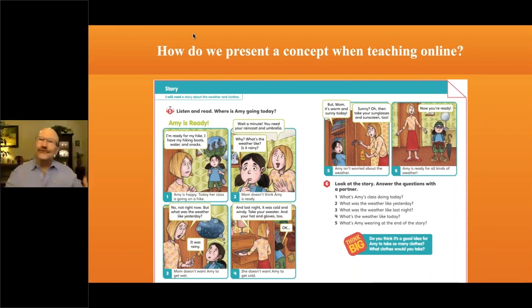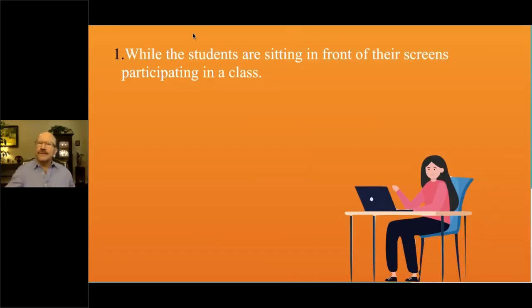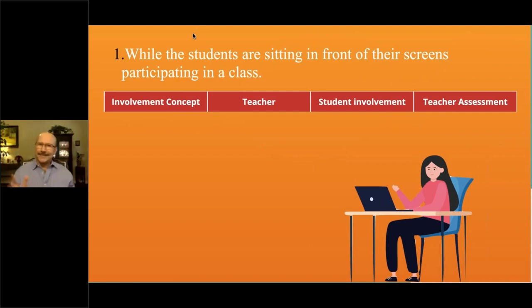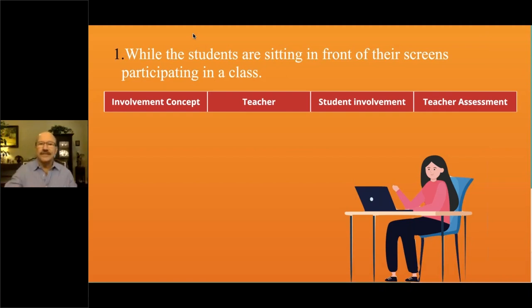Even if students were asked to read the story at home before going online, we do it together because there's always a question — there's always someone who didn't do it. While students are sitting in front of their screens is the first category. I have developed four categories: the involvement concept, what the teacher does, how the student gets involved, and the teacher assessment. Let's take a look.